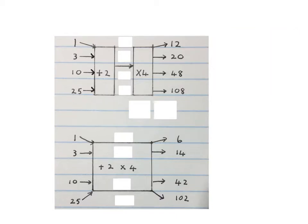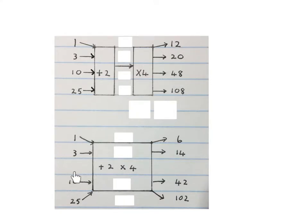In this flow diagram they told us we have to add 2 to each one of these numbers and get an answer, take those answers, times it by 4 and get the final answers. In this one they just said we had to take these numbers and plus 2 to it and times 4 to it, so here BODMAS will kick in.